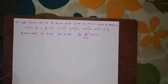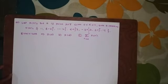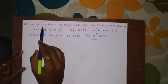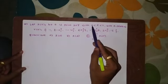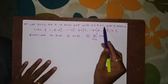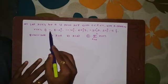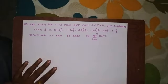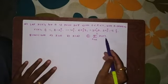Hello friends, let us see one miscellaneous example that is going to be asked in various university examinations for maybe 6 or 7 marks. The question is: let X of K be a 12-point DFT with K starting from 0 to 11. They have given the first 7 samples of X of K starting with 11, 8 minus 2J, up to 15. They ask us to find X0, X6, and the summation of X of N.